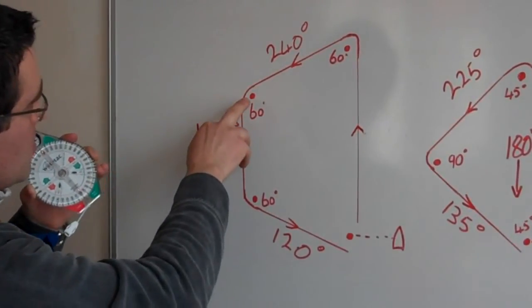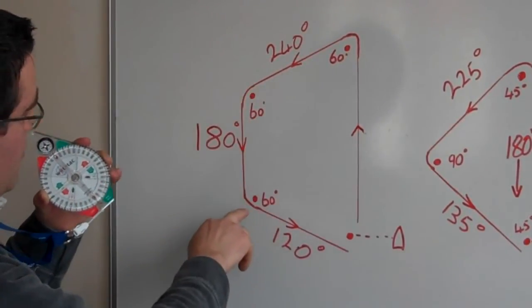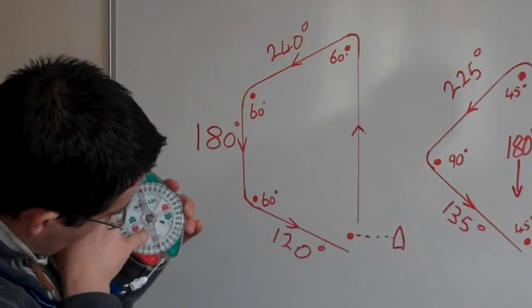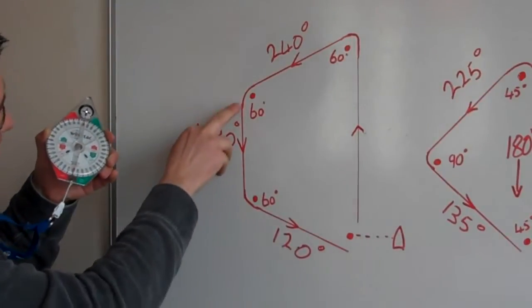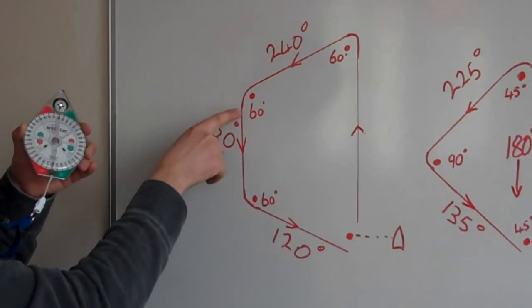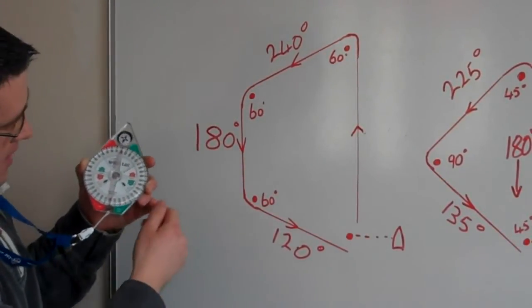We know the run, so between marks 2 and 3, if we look on here, we've got the line running down. And that line runs through 180 degrees. So, we know that that's the course to steer from marks 2 to marks 3.